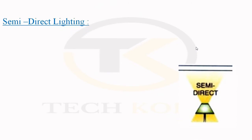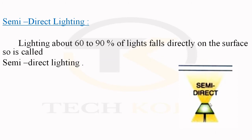Next, semi-direct lighting. In this system, about 60 to 90% of the lighting falls directly on the surface, so it is called semi-direct lighting. It is commonly used in offices, hospitals, and reception rooms. A reflector with holes or grooves is fixed on top of the bulb so the light falls towards every corner of the surface.